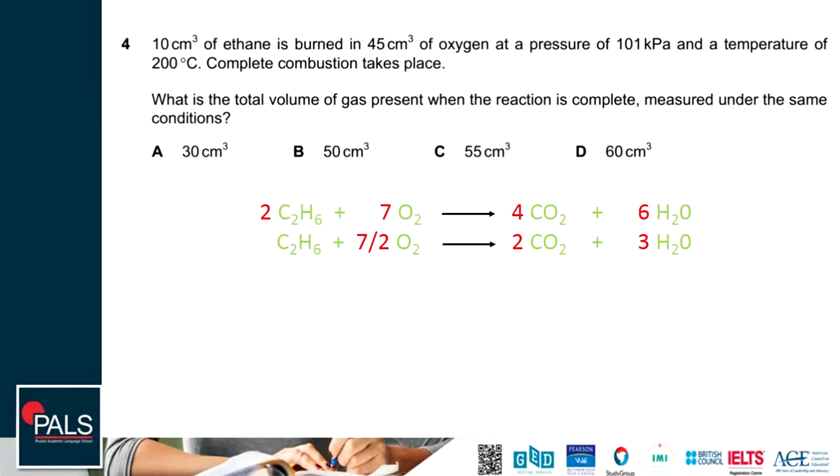Question 4: 10 cm³ of ethane is burned in 45 cm³ of oxygen at a pressure of 101 kPa and temperature of 200°C. Complete combustion takes place. What is the total volume of gas when the reaction is complete, measured under the same conditions? This is the equation of ethane combustion. It's complete combustion, therefore we will have carbon dioxide and water. This is the balanced equation: from 2 moles of ethane and 7 oxygen we will get 4 CO₂ and 6 H₂O.